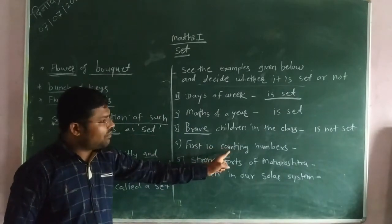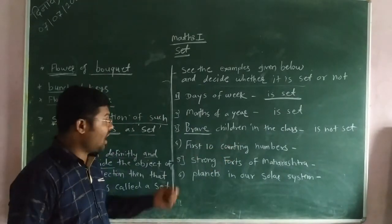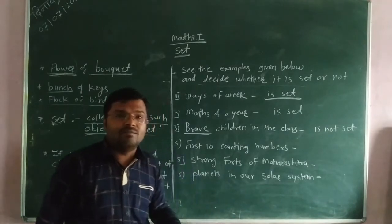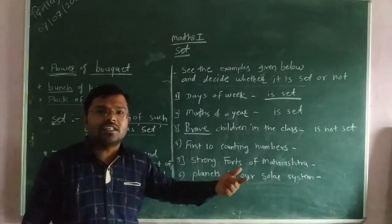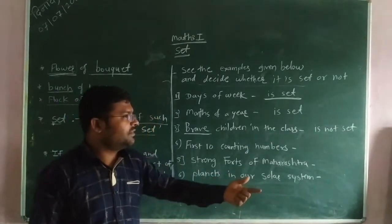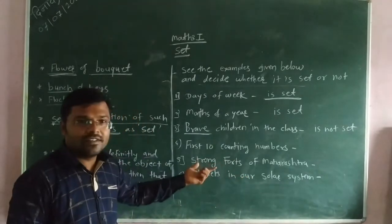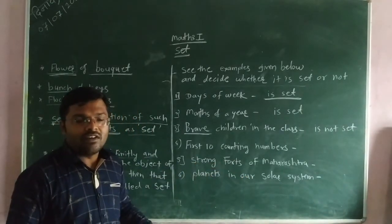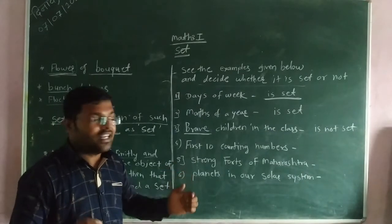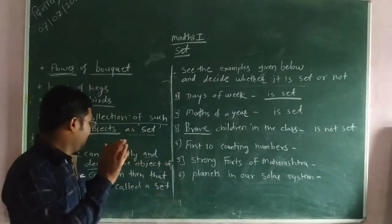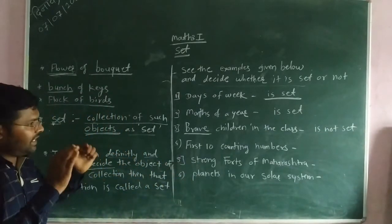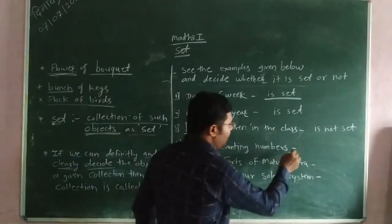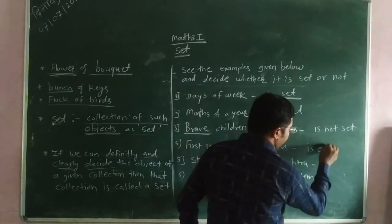First 10 counting numbers: 1, 2, 3, 4, 5, 6, 7, 8, 9, 10. Is it changeable? No. All the elements are clearly defined — we can clearly decide 1 to 10. So that means the first 10 counting numbers is also a set.